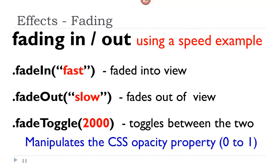Alright, the third category of effects, this ability to fade in and out. Here I have three methods. Each of them are using a speed example. Fade in, which allows the content to fade into view, fade out, fades out of view, and fade toggle. It manipulates between the two.